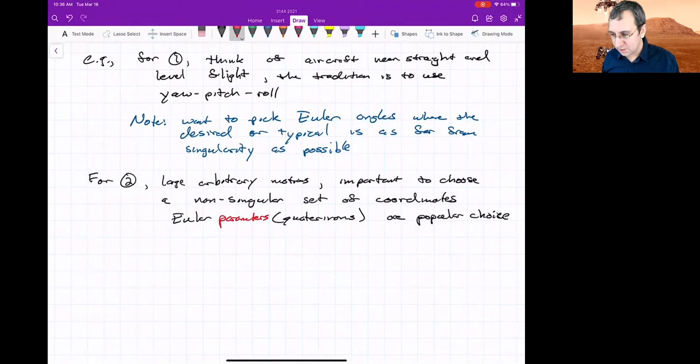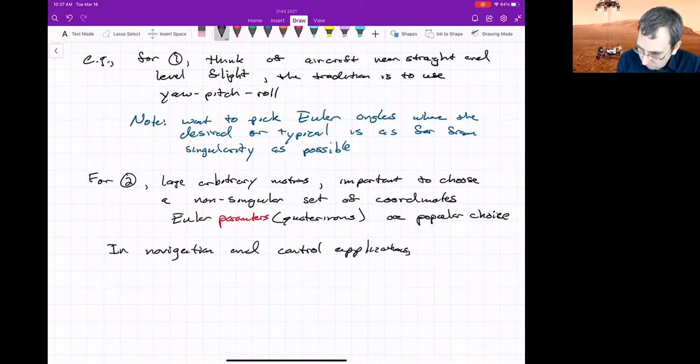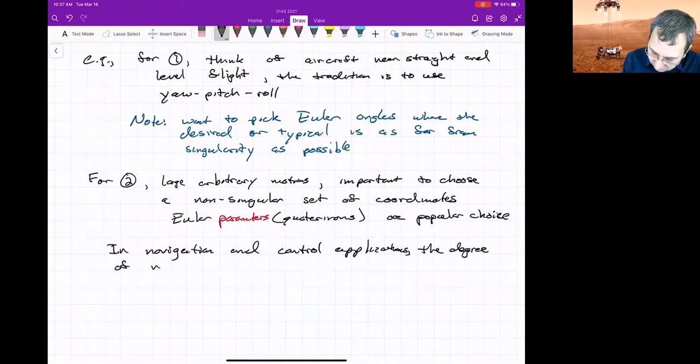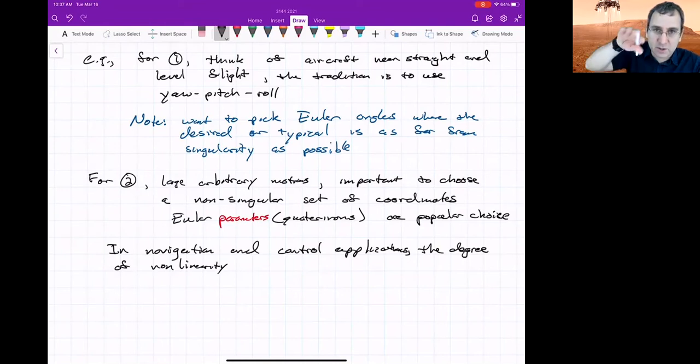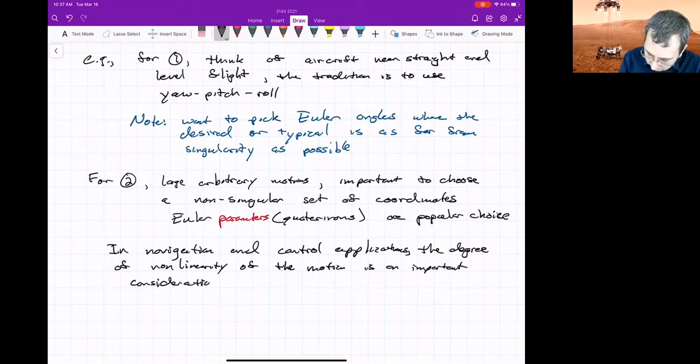So large arbitrary motions, this is important. In navigation and control applications, the degree of largeness or actually the degree of non-linearity of the motion. Linear would be I'm making small changes. If I want to make large changes, that's non-linear. That's an important consideration.